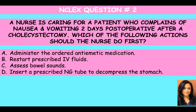We have choices A through D. A: administer the ordered antiemetic medication — that is a medication given for nausea and vomiting. B: restart prescribed IV fluids. C: assess bowel sounds. D: insert a prescribed NG tube to decompress the stomach.